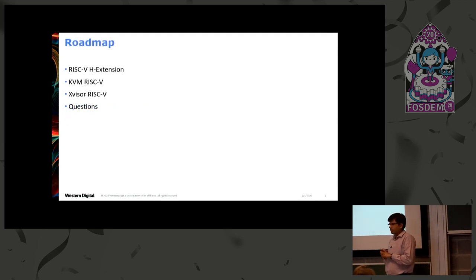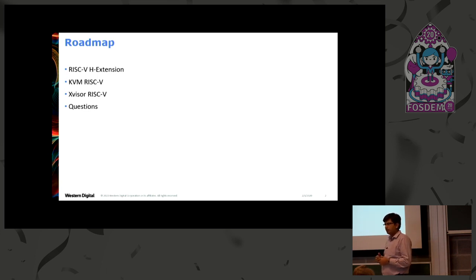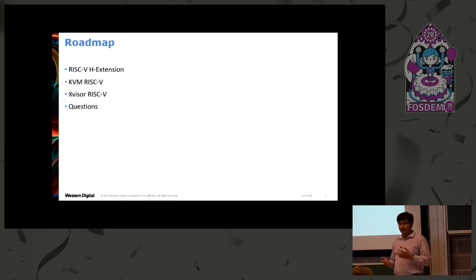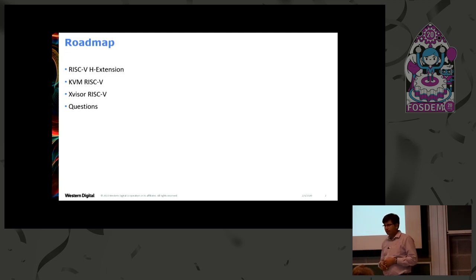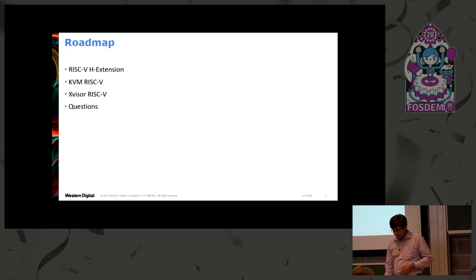Broadly we have three topics to talk about today. First is the spec, and we'll spend more time on the spec and also have slides to show an Apple-to-Apple comparison with ARM architecture. We'll also look at the status of the KVM RISC-V and XVisor RISC-V projects, and based on time we'll try to cover the software part more.